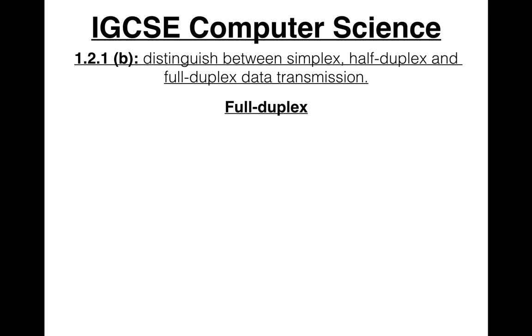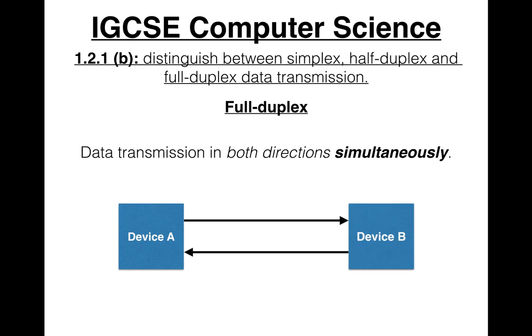Then there's full-duplex, which is data transmission in both directions simultaneously. Basically, device A can send data to device B, device B can send data to device A, and both can happen simultaneously.